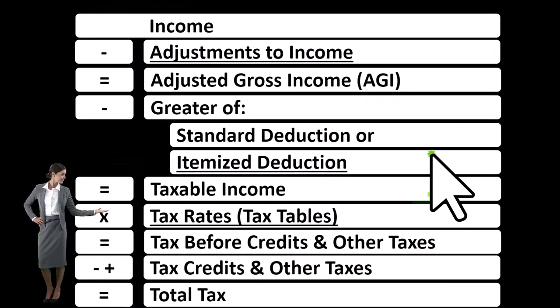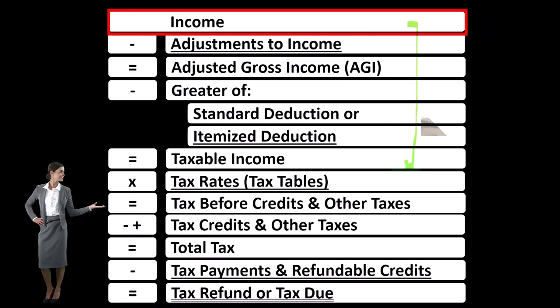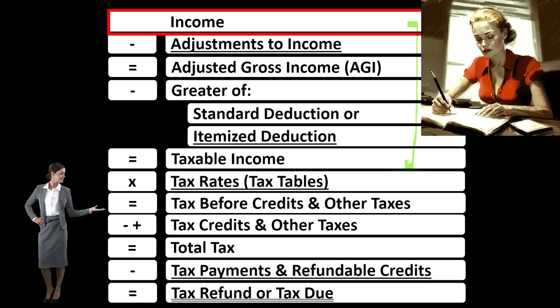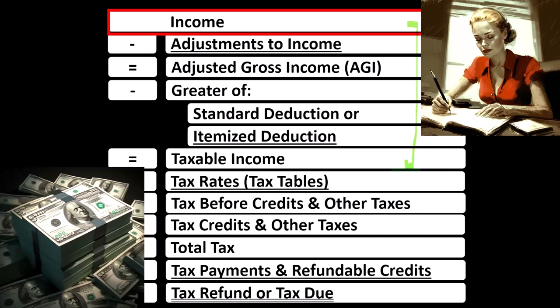Looking at the income tax formula, we're focused on line one income. Remembering the first half of the income tax formula is in essence an income statement, but just a scaffolding and outline — other forms and schedules flowing into these line items, one of those being the Schedule C.